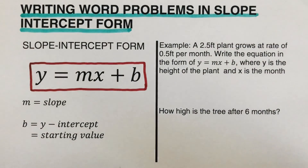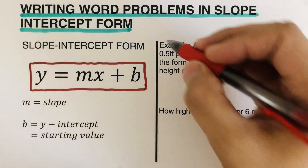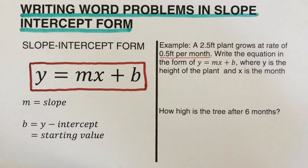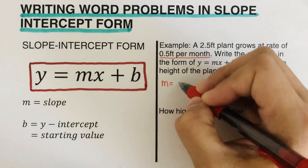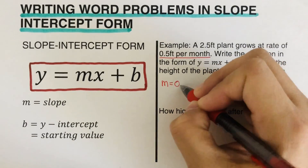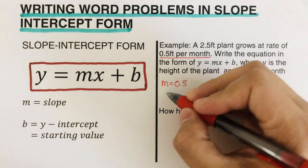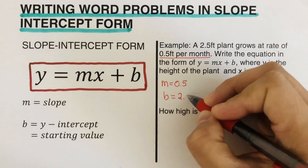In this problem, m is the growth factor. The growth rate of the plant is 0.5, so we assign that as our m. So m is 0.5. The starting value or initial value of the plant is 2.5, so b is 2.5.